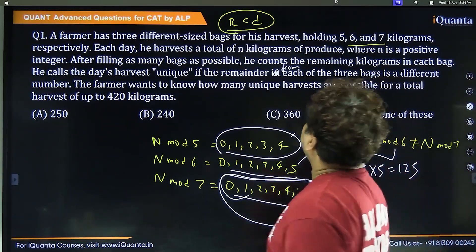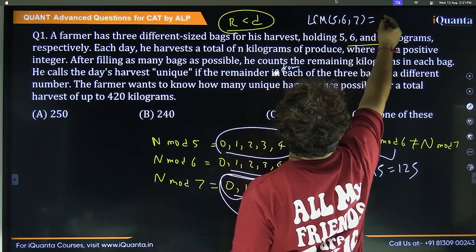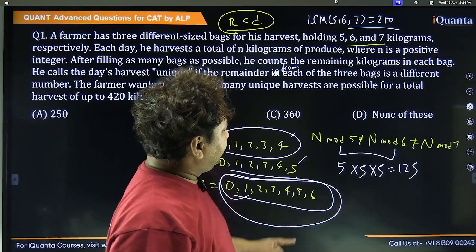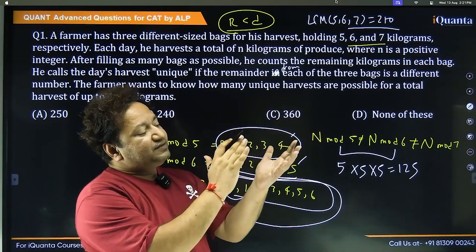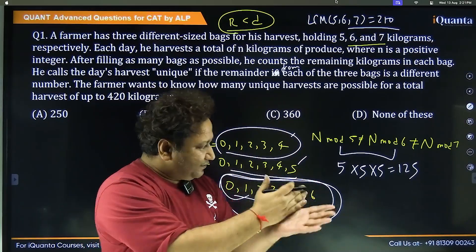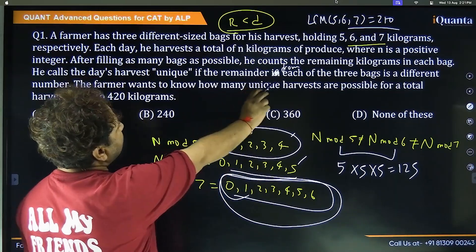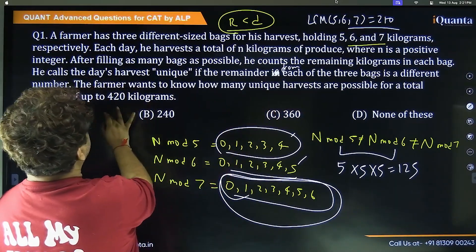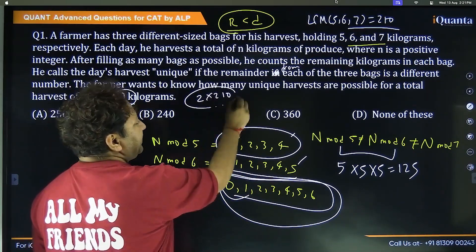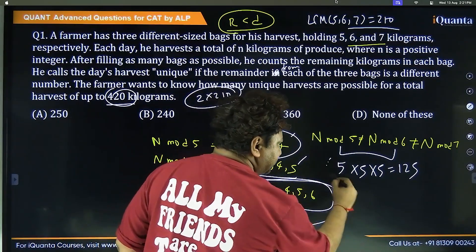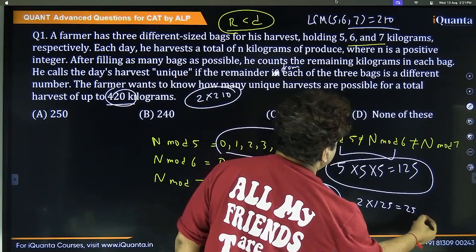But till where? The LCM of 5, 6, and 7 is 210. So from 1 to 210, we will get 125 unique harvests, because at 210 the number is divisible by all three — 5, 6, and 7 — and that is where the pattern starts repeating. We have up to 420 kilograms, and 420 is 2 times 210, so the pattern repeats twice. In one repetition it's 125; in two repetitions it's 2 × 125 = 250. So the answer is 250.